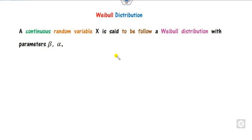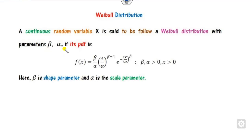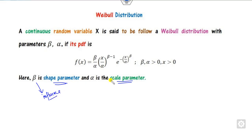What is the Weibull distribution? Any continuous random variable x is said to follow a Weibull distribution with two parameters, namely alpha and beta, if its PDF is defined in this way — where beta is the shape parameter and alpha is called the scale parameter. The shape parameter influences the shape of the distribution while alpha defines the scale.